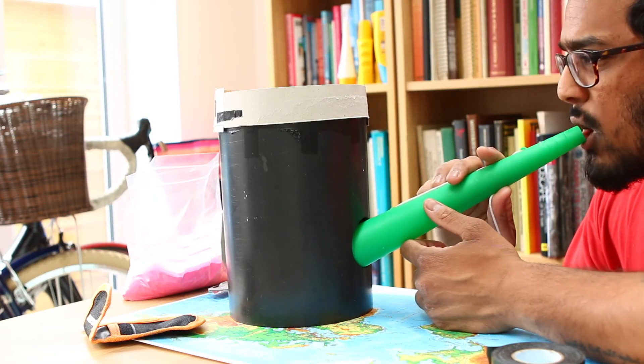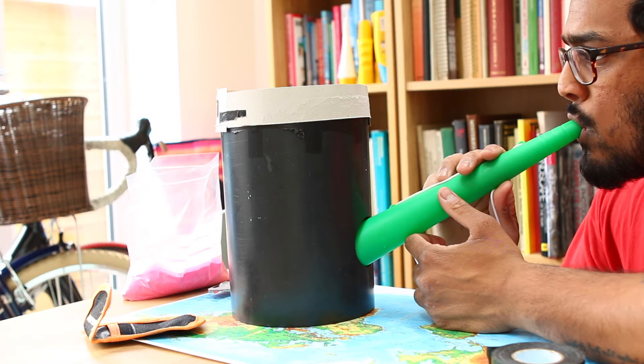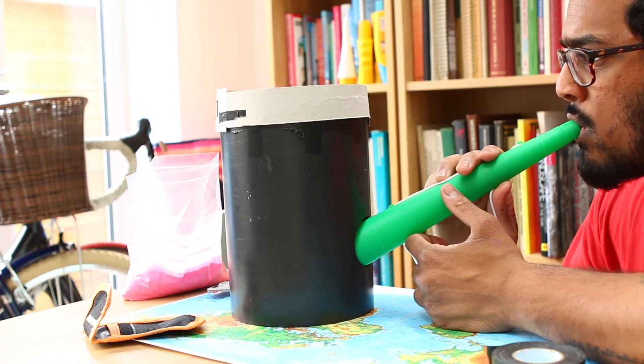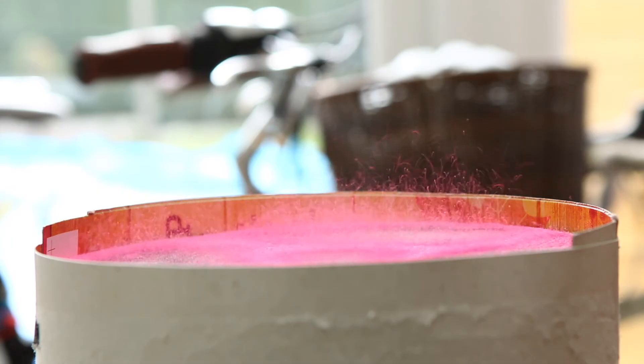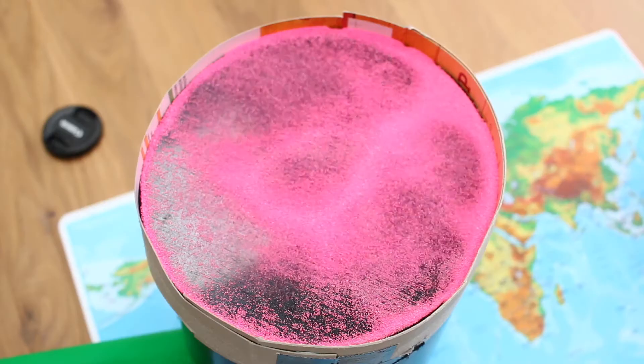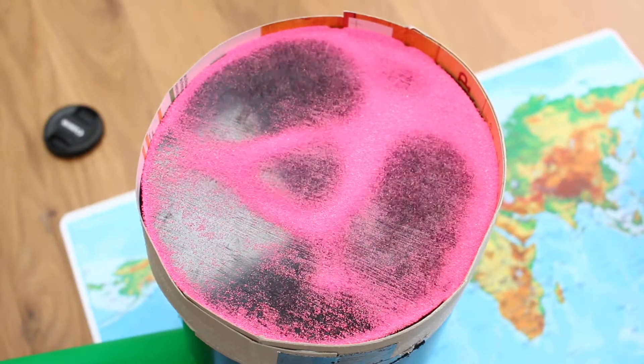Sprinkle your flour or granules on the membrane and now you're ready to start making sounds and watching the patterns emerge. As I make the sounds, the air travels through the drum and hits the membrane. Those sound waves vibrate the surface and create the patterns that you see from the pink granules.